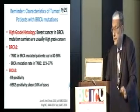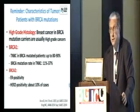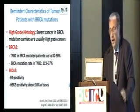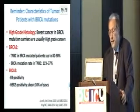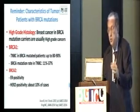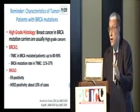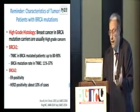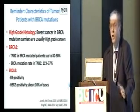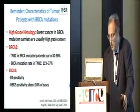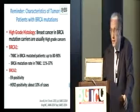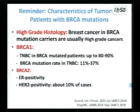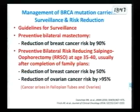The characteristics of tumors in patients with BRCA mutations: usually high-grade histology. In BRCA1, the triple negative rate in mutated patients is up to 80 to 90%. If you test patients who have triple negative breast cancer, there is an 11 to 37% chance of being a BRCA carrier. In BRCA2, we see estrogen receptor positivity, and also about 10% HER2 positivity.